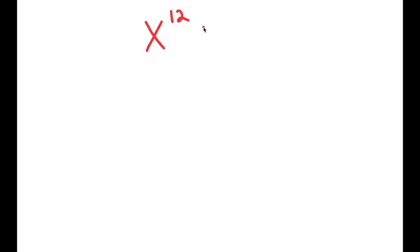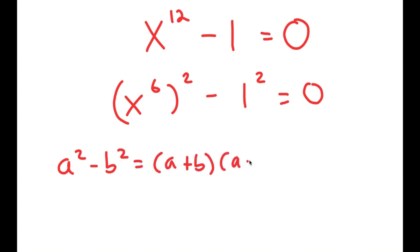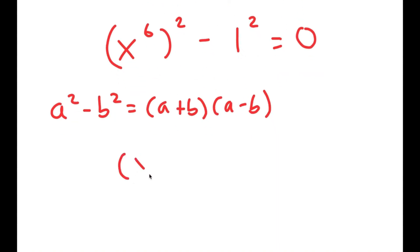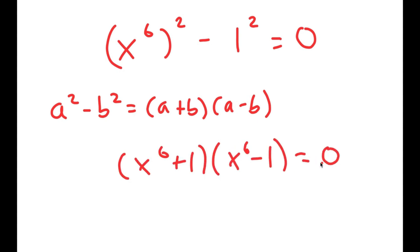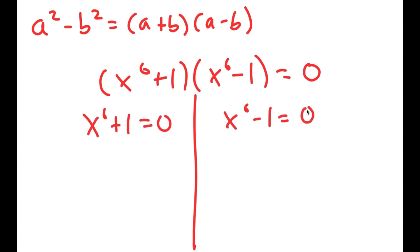In this video, I'm going to solve the equation x to the power of 12 minus one is equal to zero. To solve this, I'll rewrite this as x to the power of 6, squared, minus 1 squared equals zero, so I can use the property a squared minus b squared equals a plus b times a minus b. This turns into x to the power of 6 plus 1 times x to the power of 6 minus 1 equals zero, giving me two equations: x⁶ plus 1 equals zero and x⁶ minus 1 equals zero.